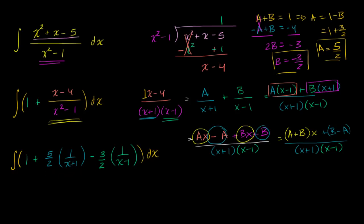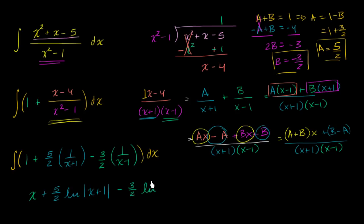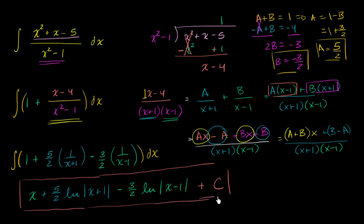Now it's straightforward to integrate. The antiderivative of one is x. The antiderivative of five halves times one over x plus one is plus five halves times the natural log of the absolute value of x plus one — since the derivative of x plus one is just one, we can integrate directly (or use u substitution with u equals x plus one). Similarly, we get minus three halves times the natural log of the absolute value of x minus one. And of course we add the constant of integration. And there we have it — we've evaluated the integral.